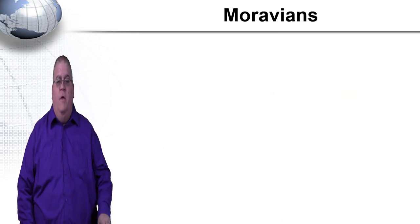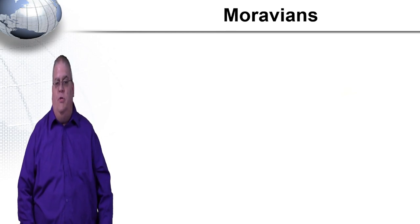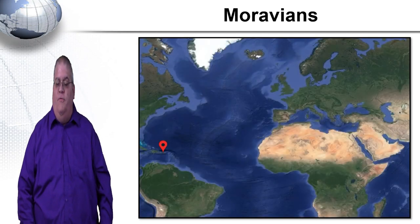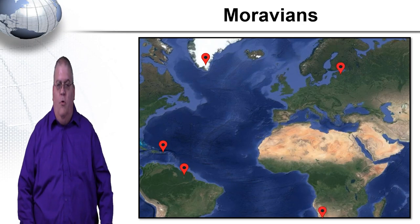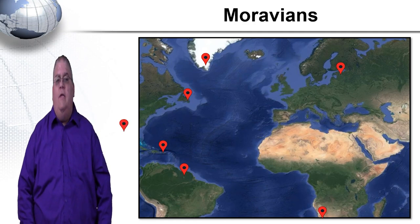Ziegenbald was not the only missionary sent by the Moravians — not even close. There were approximately 2,000 missionaries sent out in the 1700s. They went to the Danish Virgin Islands, Greenland, Suriname, South Africa, Estonia, Labrador, and many other places around the world, including the missionaries to Georgia who strongly influenced the Wesley brothers.